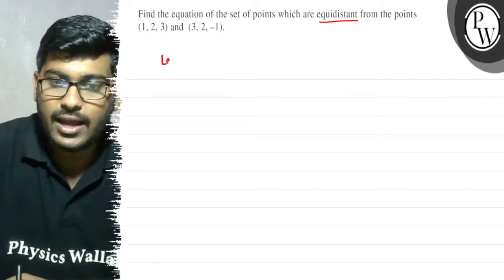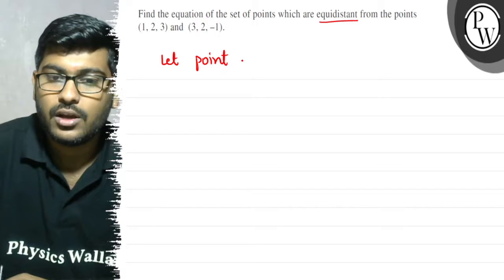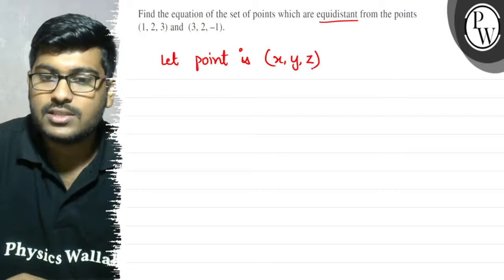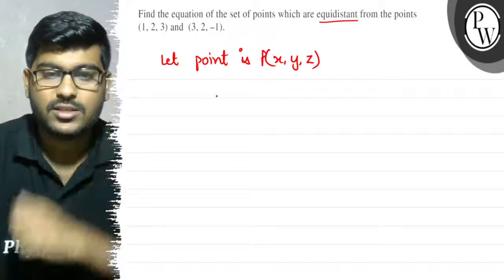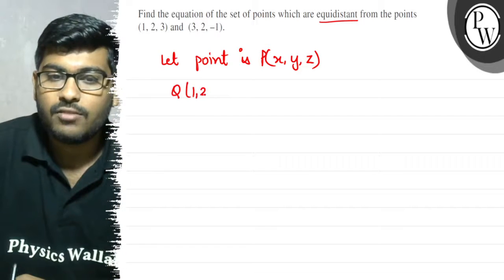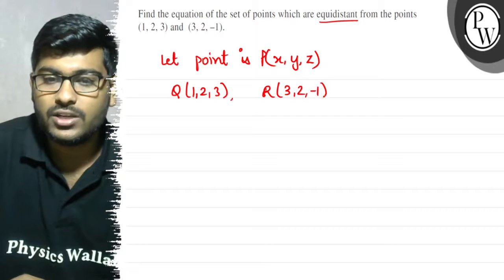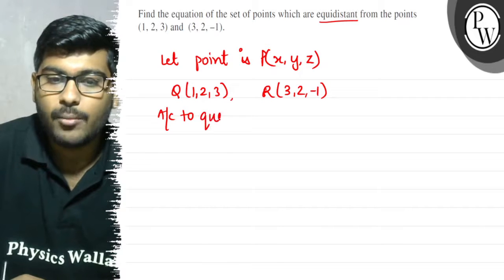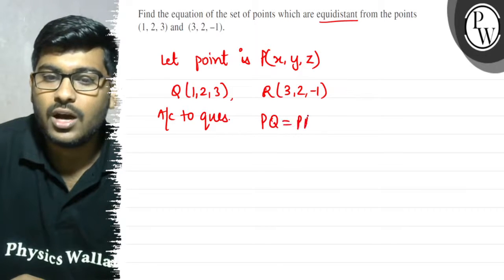So let's say the point is P = (x, y, z), Q = (1, 2, 3), and R = (3, 2, -1). Now according to the question, PQ is equal to PR. This is the condition for the set of points.